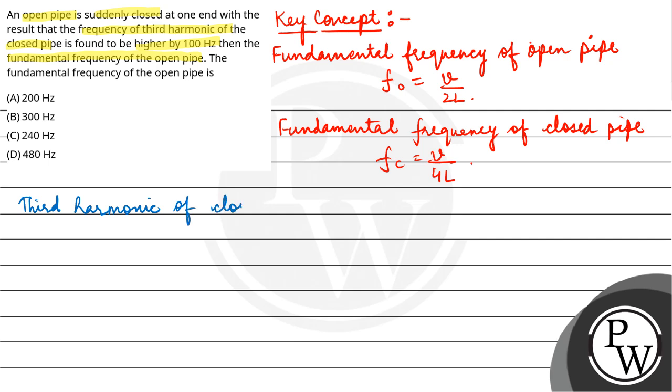So the third harmonic of closed pipe will be 3 times V upon 4L. The fundamental frequency of open pipe is V by 2L.